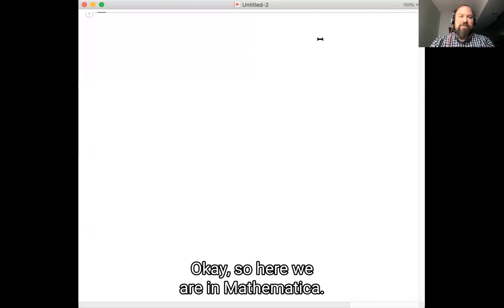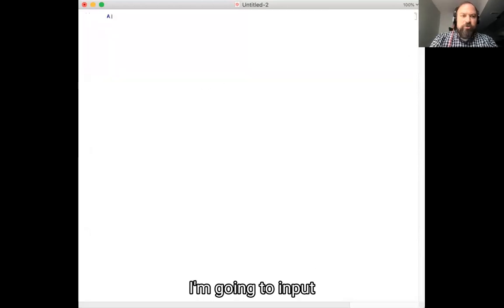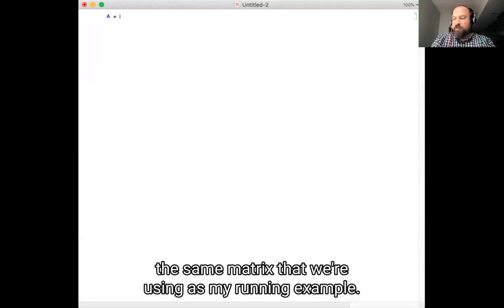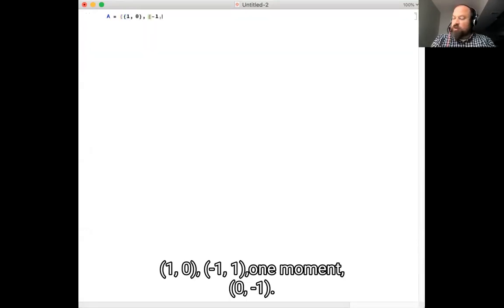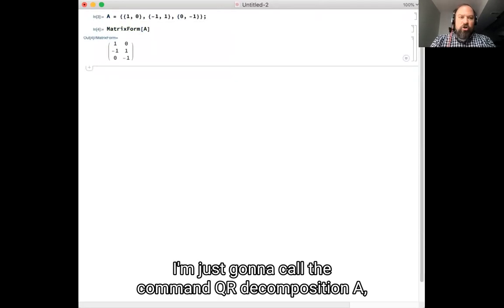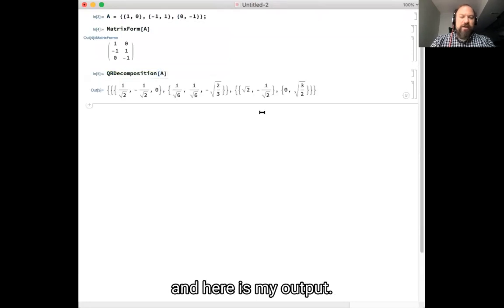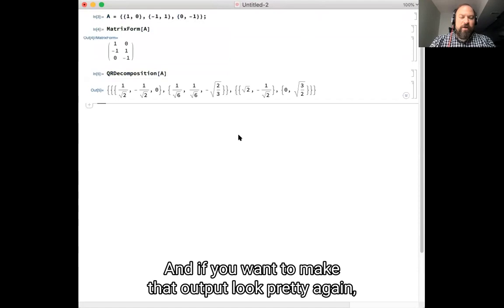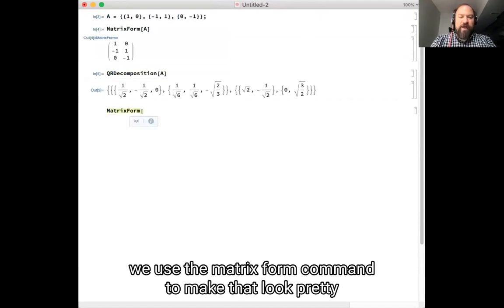Okay, so here we are in Mathematica. I'm going to input the same matrix I've been using as my running example. One, zero, negative one, one. One moment. There we go. Zero, negative one. If you want to see that matrix looking pretty, here it is. And then I'm just going to call the command QR decomposition. A, and here is my output. And if you want to make that output look pretty, again, we'll use the matrix form command to make that look pretty. Here we go.